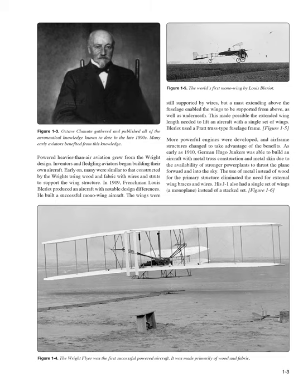More powerful engines were developed, and airframe structures changed to take advantage of the benefits. As early as 1910, German Hugo Junkers was able to build an aircraft with metal truss construction and metal skin, due to the availability of stronger power plants. The use of metal instead of wood for the primary structure eliminated the need for external wing braces and wires. His J-1 also had a single set of wings — a monoplane — instead of a stacked set.